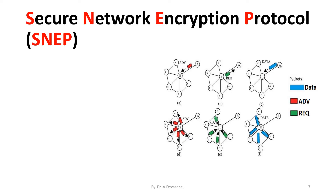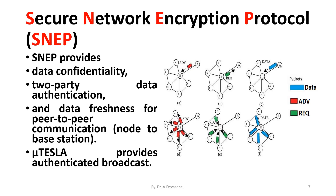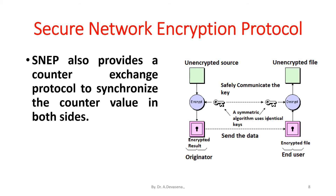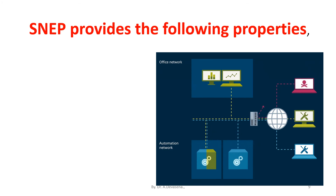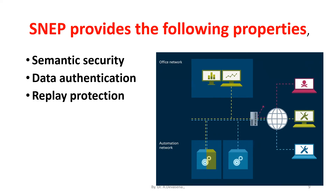SNEP provides data confidentiality, two-party data authentication, and data freshness for peer-to-peer communication — that is, node-to-base communication. μTESLA provides authenticated broadcast. SNEP also provides a counter exchange protocol to synchronize the counter value on both sides. The properties provided by SNEP include: semantic security, data authentication, replay protection, weak freshness, and low communication overhead.